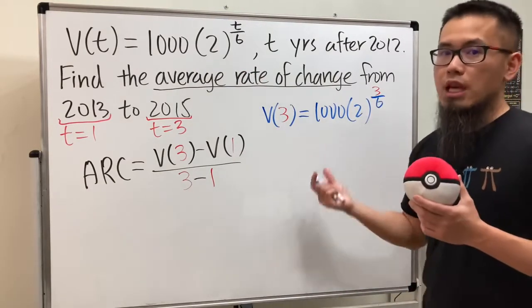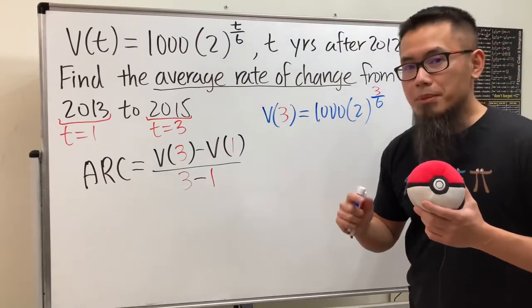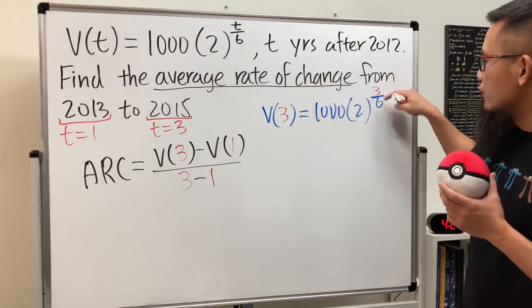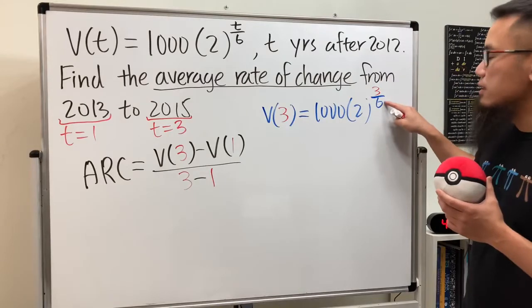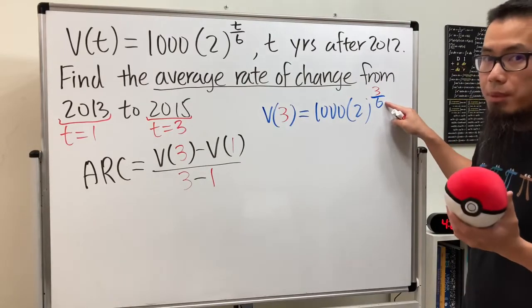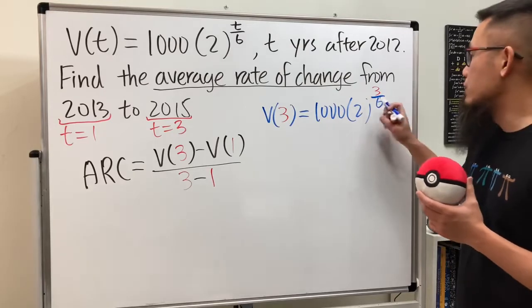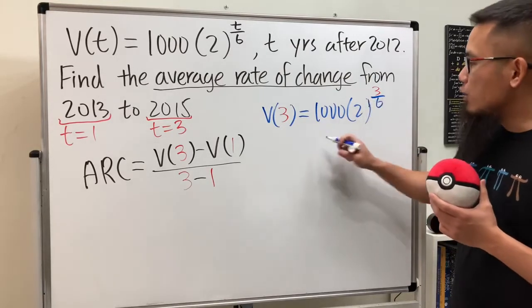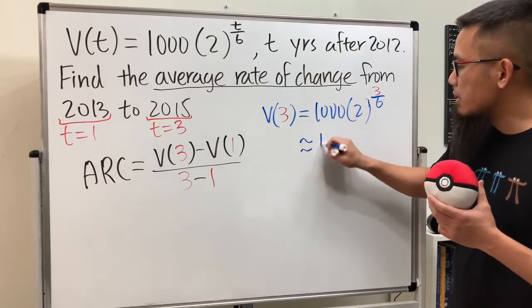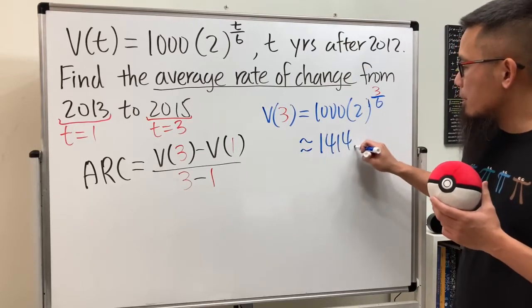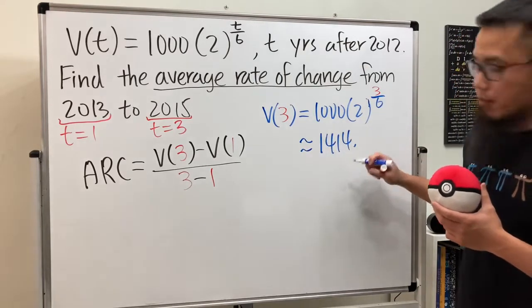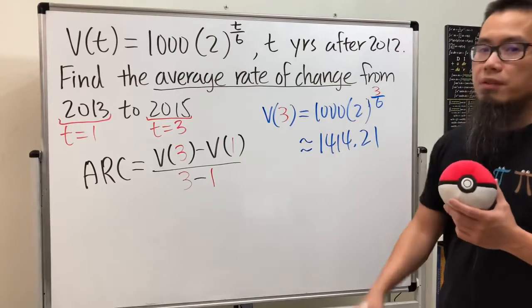And now you just use the calculator for this. However, keep in mind when you do this to the 3 over 6 power, be sure you put parentheses around 3 over 6, or better yet just do this raised to the 0.5 power. So one way or the other, and you should be getting approximately 1414.21. Right, that should be V(3).